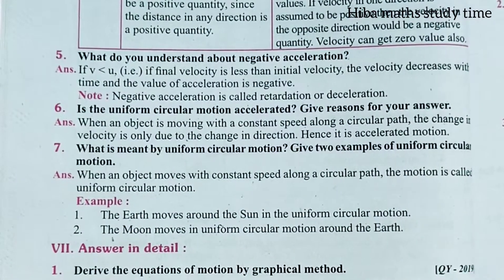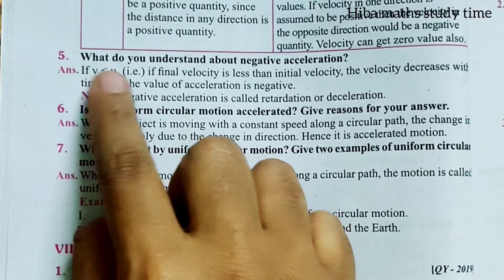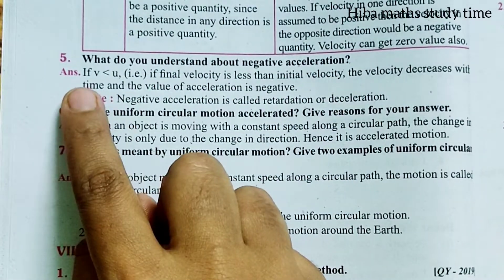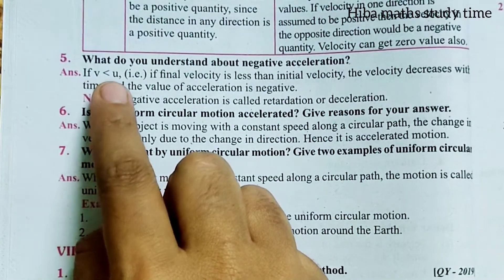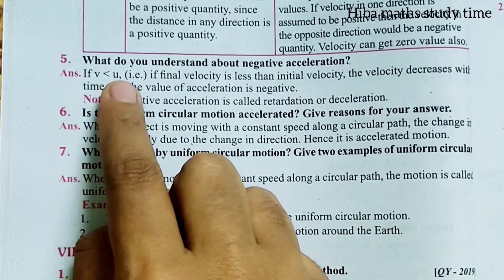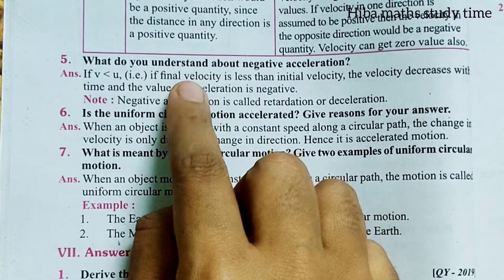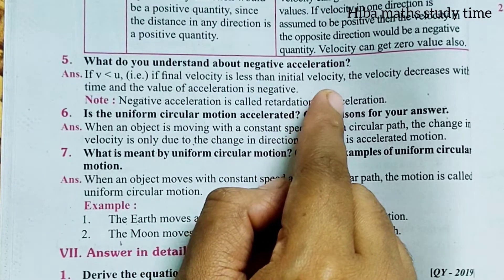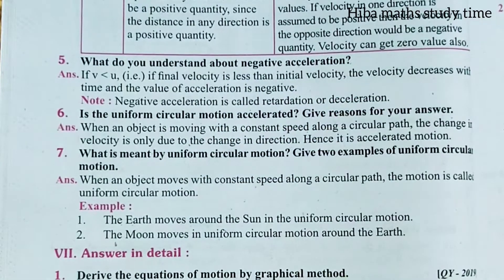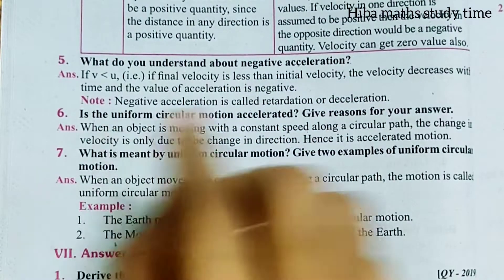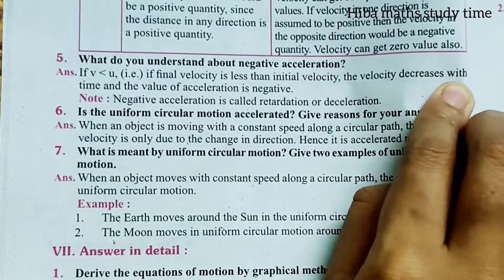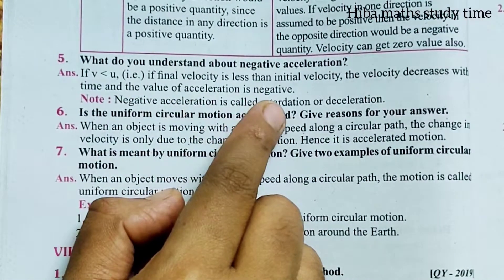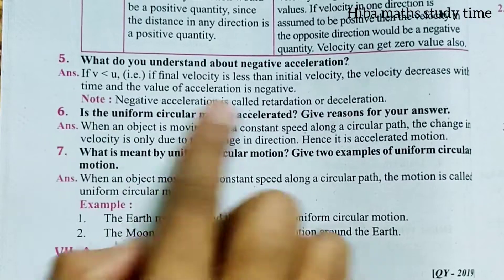Fifth question: What do you understand about negative acceleration? If v is less than u — where v is final velocity and u is initial velocity — then final velocity is less than initial velocity. The velocity decreases with time, and the value of acceleration is negative.